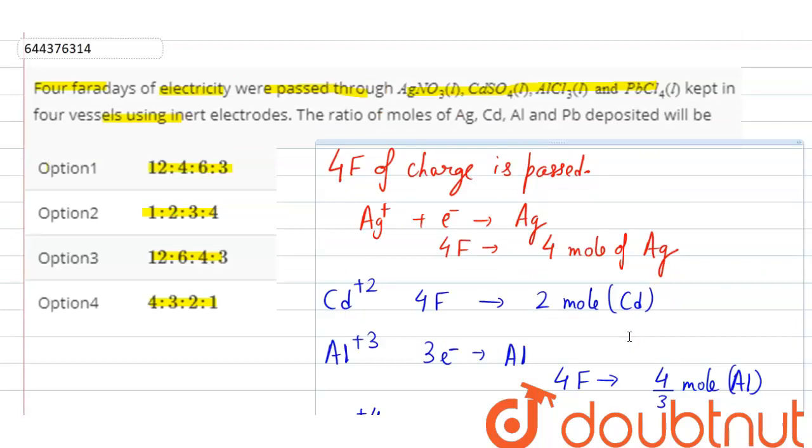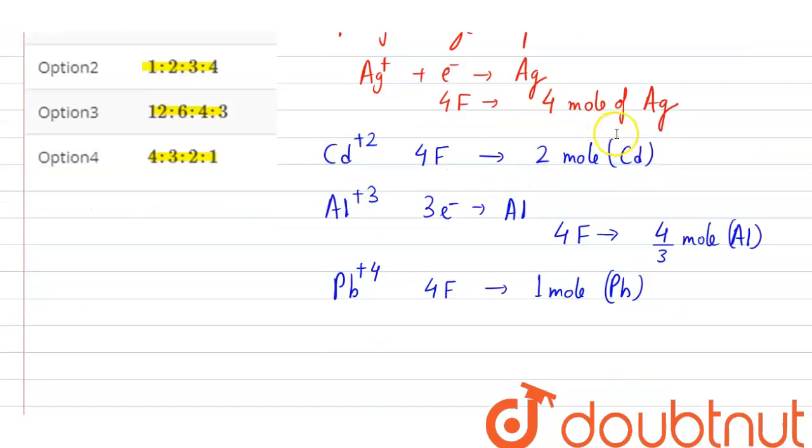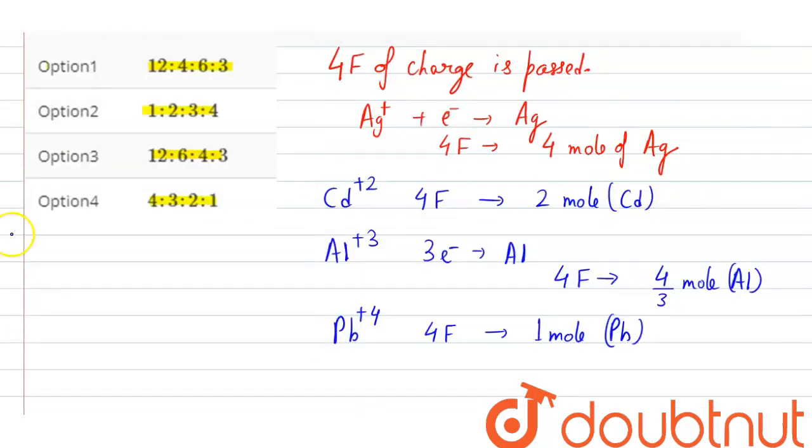So the ratio of these metals according to the given order will be silver, Cadmium, Aluminium and Lead. The ratio will be 4 is to 2 is to 4 by 3 is to 1. Taking the LCM of 3, we will get 12 is to 6 is to 4 is to 3.